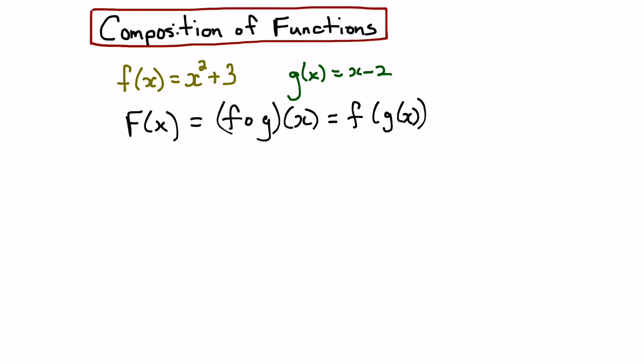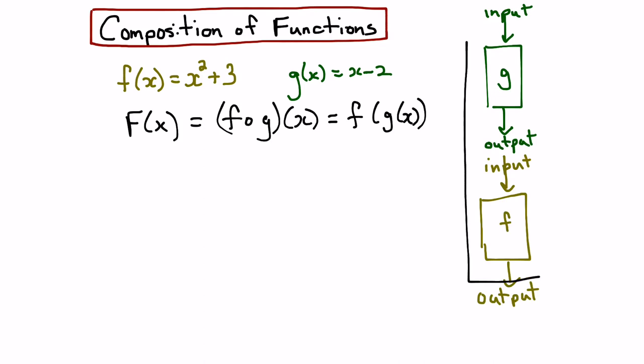So we're starting with the g function. Now let's look at it in a diagrammatic form. We have inputs that go into the g function, or the g machine, and we have an output. In turn, the output from g becomes the input for the f function. So this two-step process then becomes the combined f of g function.